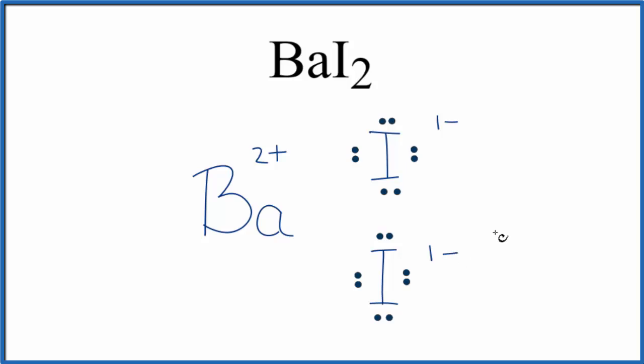Sometimes we just write minus. Because the electrons have been transferred, we want to put brackets around each iodine atom to show that they're transferred and not shared. So this is the Lewis structure for BaI2, barium iodide.